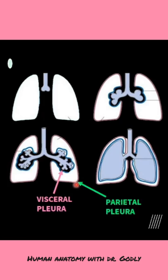Thus two layers of serous membrane are formed. In between you have fluid, and this cavity is known as the pleural cavity or pleural space. So the two layers of the pleura are the parietal pleura and the visceral pleura.